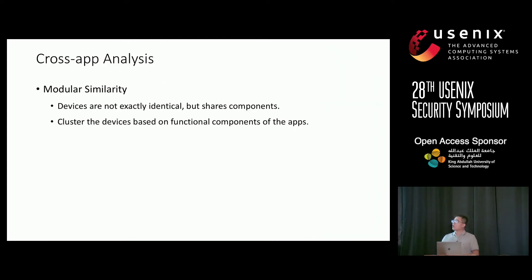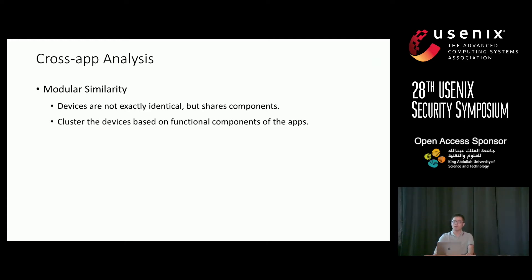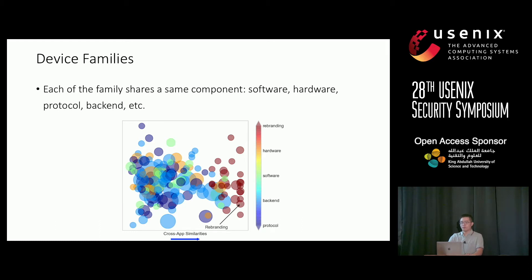For cross-app analysis, because devices are usually not identical but only share some small components, we do a modular or packet-based similarity check and cluster devices into the same family based on functional components of the app. Examples of device families show each family shares a similar component — such as software running on the device, hardware, supported protocol, or backend the device connects to.